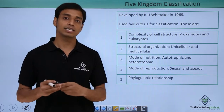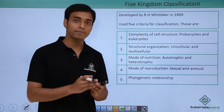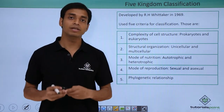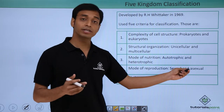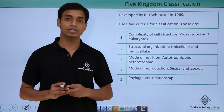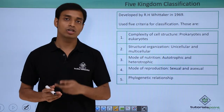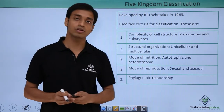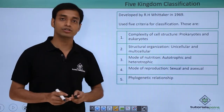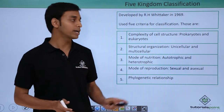The next criterion used was the mode of reproduction, which can be of two types: sexual and asexual. Sexual reproduction is usually biparental, involving the fusion of male and female gametes. Asexual reproduction is uniparental — only one parent is required and fusion of male and female gametes does not occur.